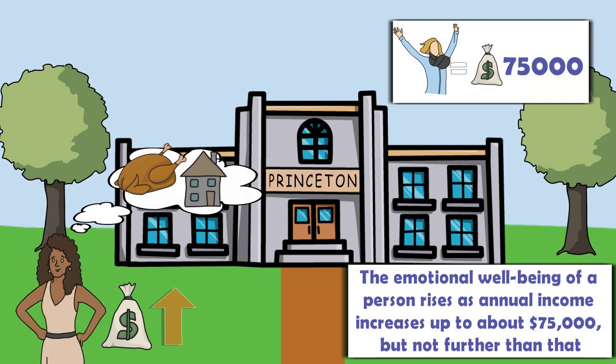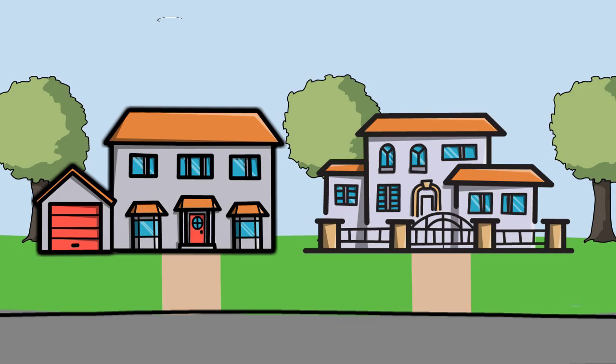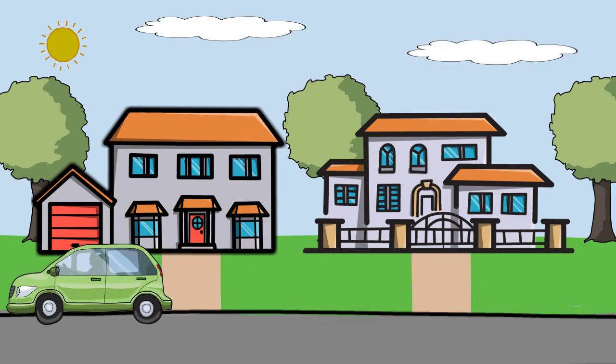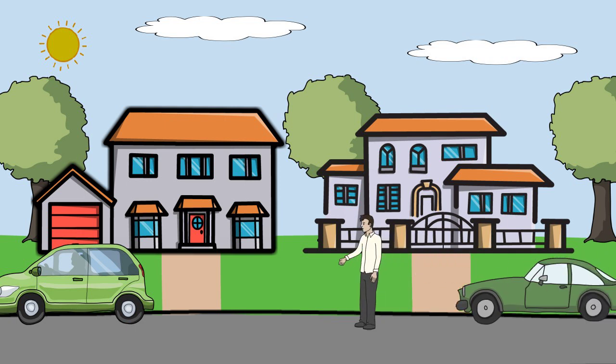Part of the diminishing return effect can be explained by adaptations. As wealth rises, people adjust or get used to their new and better circumstances. This increases their expectations and aspirations. For example, a newly rich person moving to an upscale neighborhood will make the acquaintance of other people who seem even wealthier and that can diminish happiness.